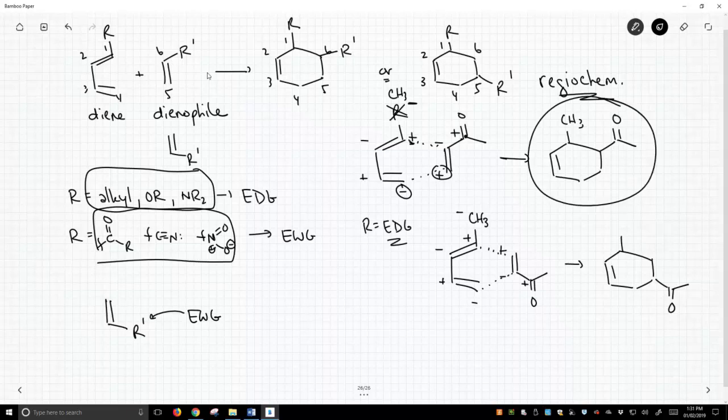So how do you determine the regiochemical outcome of Diels-Alder reactions? You look at the R groups on your diene and dienophile, decide if they are electron donating or electron withdrawing groups. Then you put on the appropriate charges and you line them up to make sure that you match opposite charges to get what will presumably be the major product.